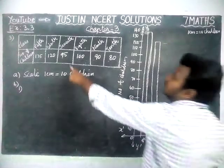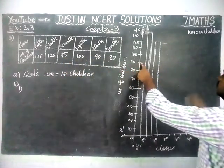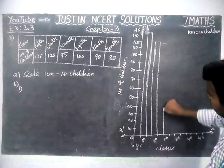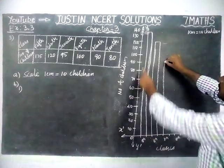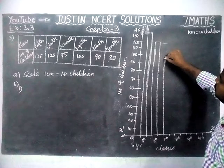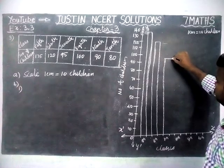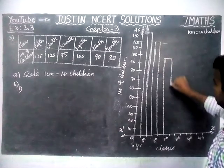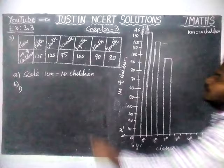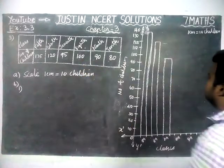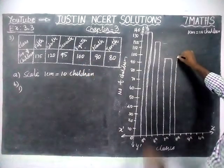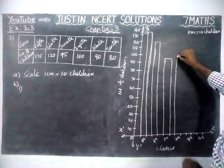In 7th standard, 95 is there. 90 is here, then in between 90 and 100, we mark 95 for 7th standard. Then on 8th standard, 100 — we are drawing up to 100.